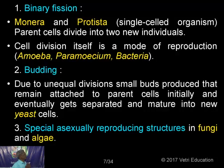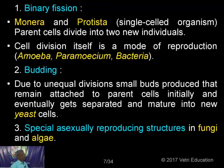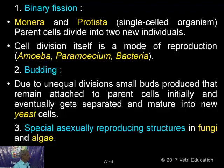Binary fission and budding — I was just explaining how these take place. Budding occurs in yeast, binary fission in bacteria. In Monera and Protista, binary fission occurs, where cell division itself is the mode of reproduction. Due to unequal divisions, small buds are produced that remain attached to parent cells initially and eventually get separated and mature into new yeast cells. Special asexual reproducing structures are also seen in fungi and algae.